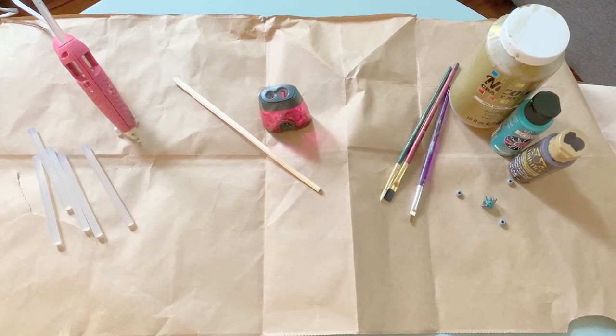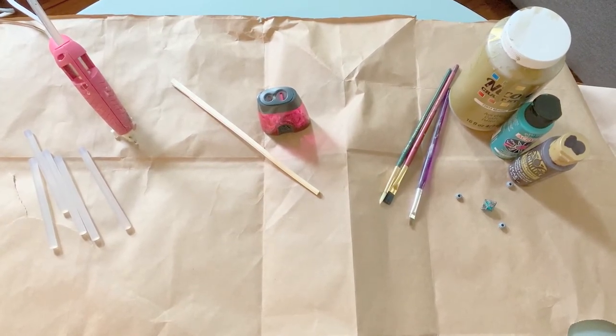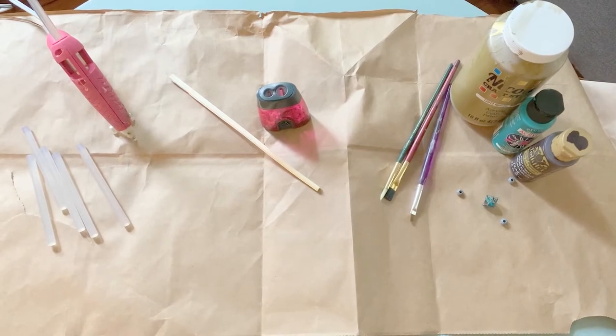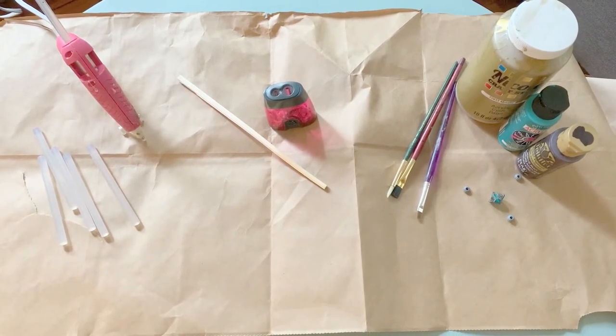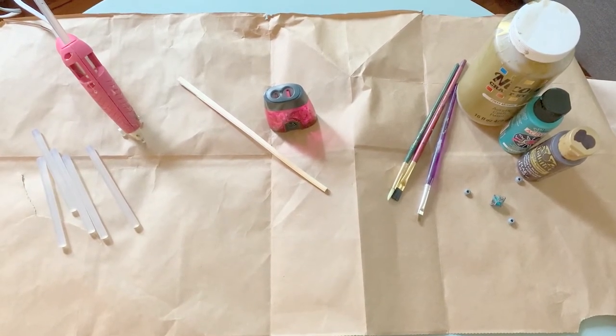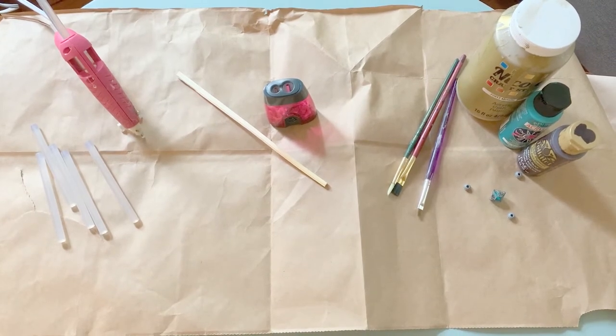Today we're going to be making magic wands. For this craft you'll just need some hot glue and I'm using a chopstick but you could also use an actual stick or a hair stick. Anything that's long and pointy, maybe even a pencil would work fine.